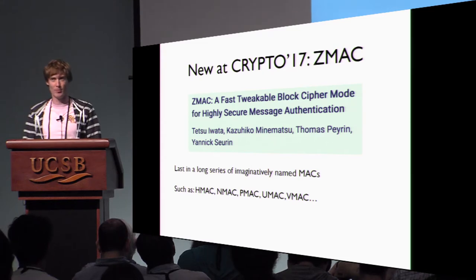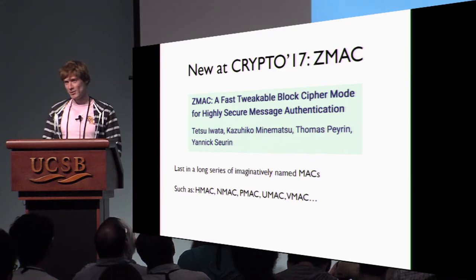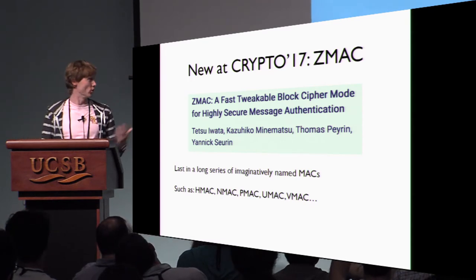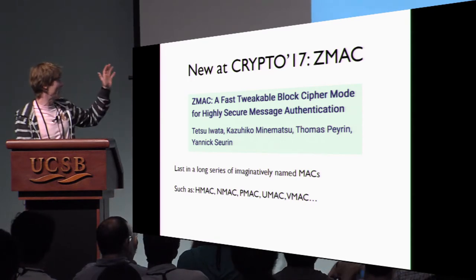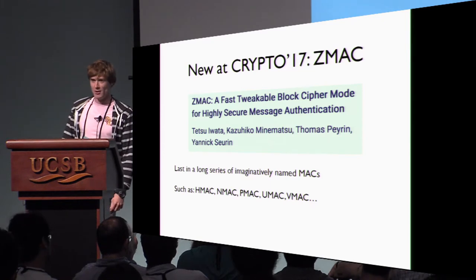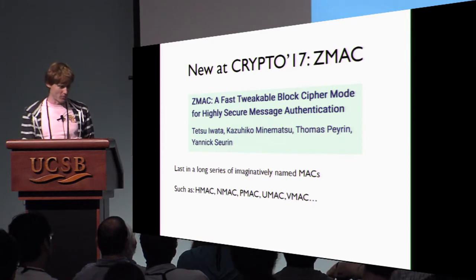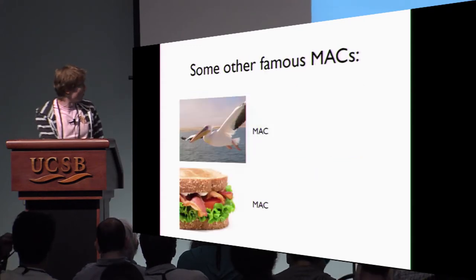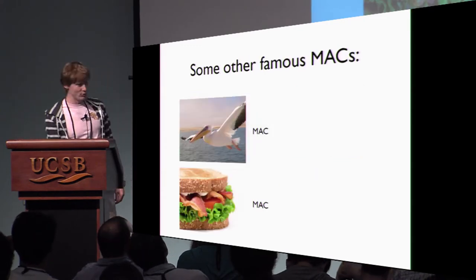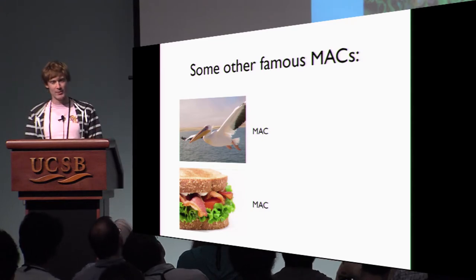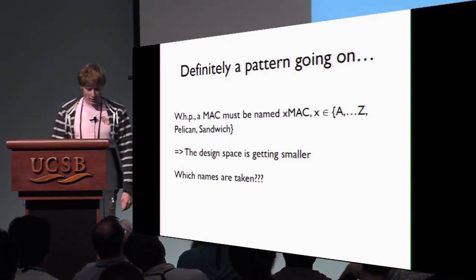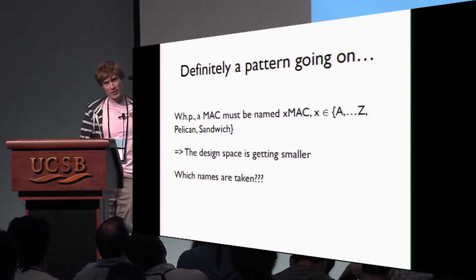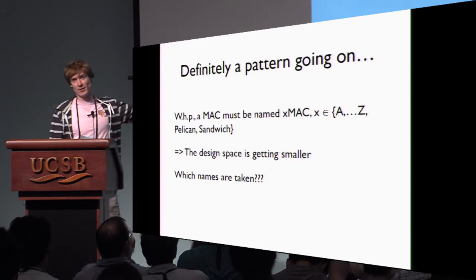ZMAC is a new MAC and the latest in a long series of very imaginatively named and good MACs such as HMAC, NMAC, PMAC, UMAC, VMAC. Some designers apparently were a bit more confused about picking names for their algorithm because we also have the very famous Pelican MAC and Sandwich MAC. So empirically it seems to be the case that if you have a MAC algorithm, with high probability the name will be XMAC with X a letter in the Roman alphabet, or a Pelican or a sandwich.